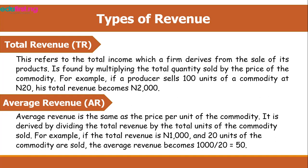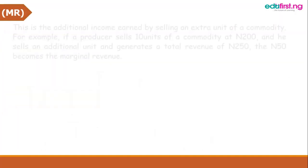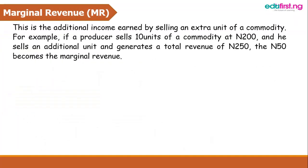Marginal revenue is the additional income earned by selling an extra unit of a commodity. For example, if a producer sells 10 units of a commodity at 200 naira and then sells an additional unit generating a total revenue of 250 naira, the extra 15 naira becomes the marginal revenue. Wait — the extra amount added is the marginal revenue.